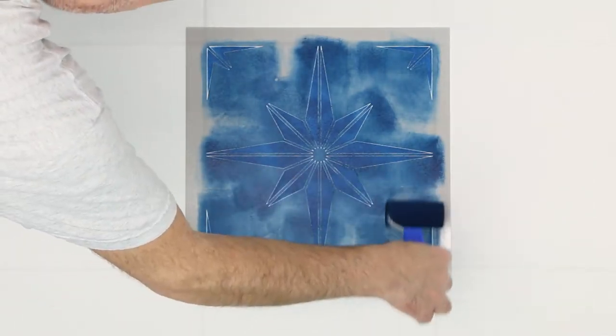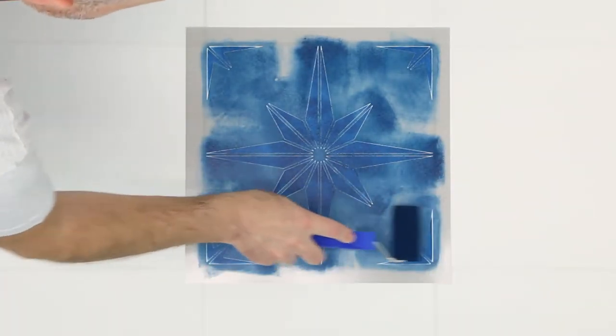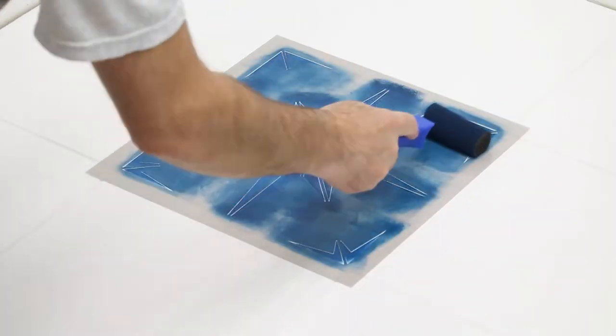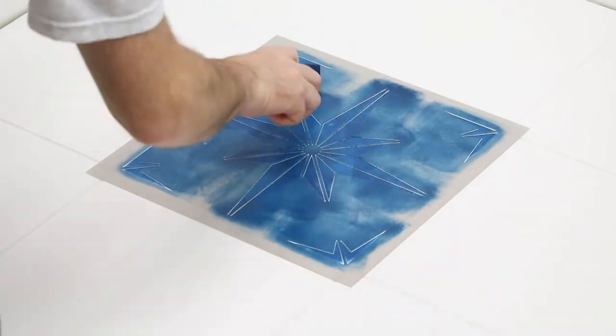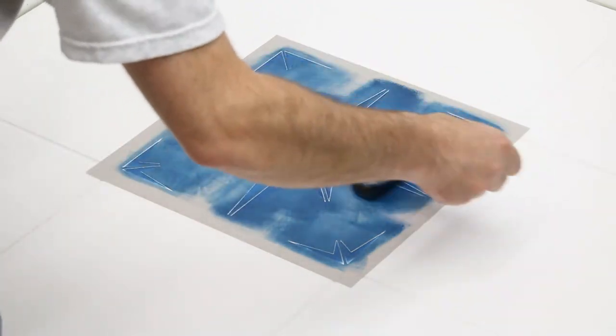When you're working with tiles in a corner or up against a wall, either bend the edge of the stencil to make it flat or trim the stencil edge. We recommend doing this after all other tiles are stenciled and completely dry.